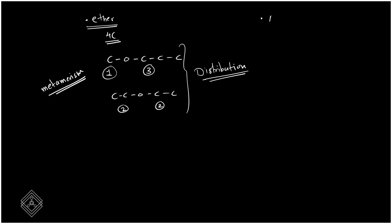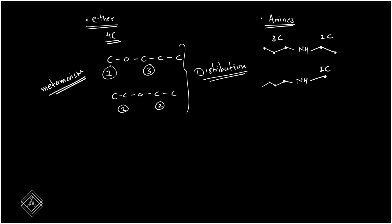Similarly for a secondary amine (NH): one arrangement could be 3 carbons on one side and 1 on the other, while another arrangement could be 1 carbon on one side and 4 carbons on the other. The distribution of carbons around the nitrogen changes — this is another example of metamerism.